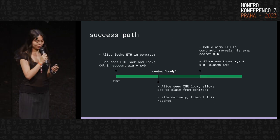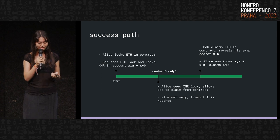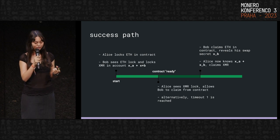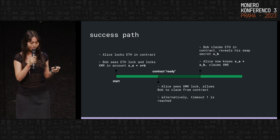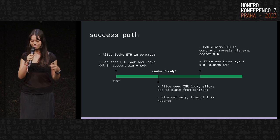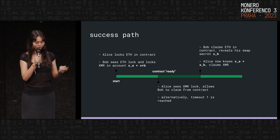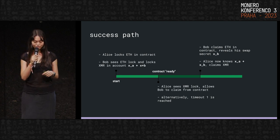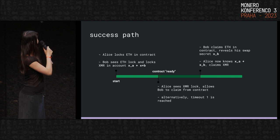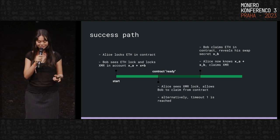For the success path: Alice has to lock the ETH first. There's a smart contract deployed on Ethereum which Alice locks the ETH in. Alice also provides commitments to the two secret values when she does that lock step. Then Bob sees the lock, confirms the commitments are correct and the value, and then locks the Monero in an account on the Monero chain, where the private key is the two secrets summed together.